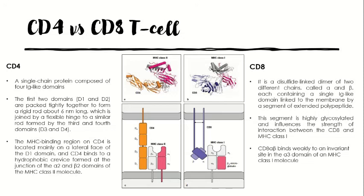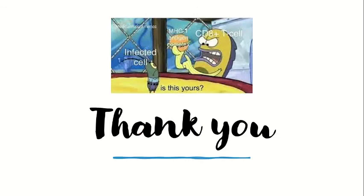In contrast, CD8 has a strikingly different structure: it is a disulfide-linked dimer of two different chains, alpha and beta, each consisting of an Ig-like domain linked to the membrane by a segment of extended, highly glycosylated polypeptide. This glycosylated segment greatly influences the strength of interaction between CD8 and MHC class 1. The key takeaways are the structural differences between CD4 and CD8, and how they interact with different classes of MHC molecules — CD4 with MHC class 2 and CD8 with MHC class 1. This concludes our discussion of how the adaptive immune system responds to presented antigens.